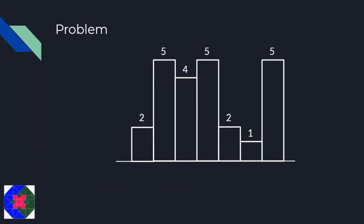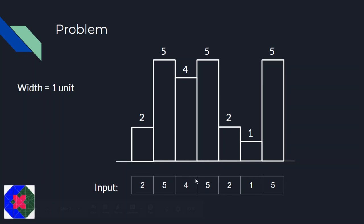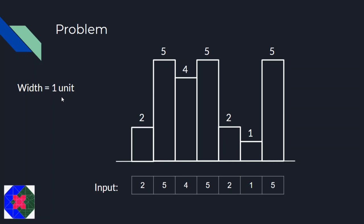We will be given a histogram. In a histogram we have heights: 2, 5, 4, 5, 2, 1, 5, and it will be given to you in the form of an input list. What you are required to do is find out the area of every rectangle. We assume that every bar has a width of 1 unit.